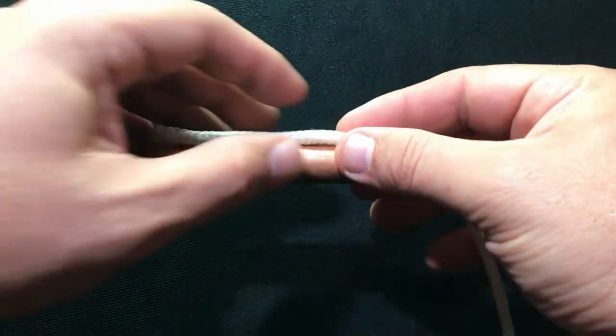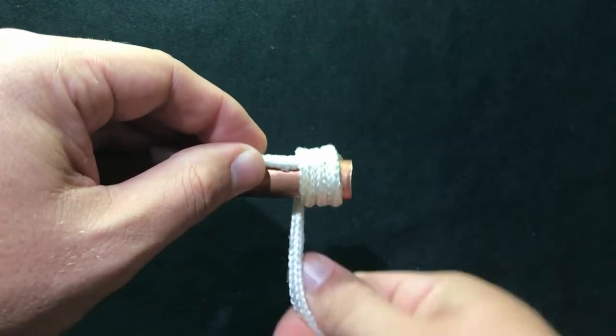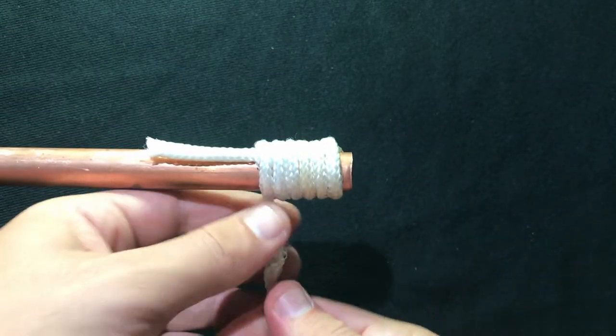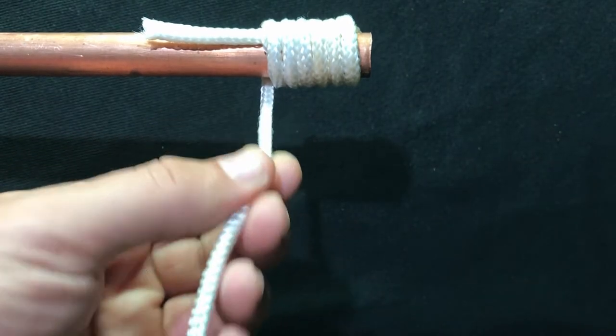First, I'm going to wrap the cord around the pipe as if I'm laying a base of thread on a hook shank. Now if this were a real fly, I would be holding the bobbin in my left hand, keeping the line taut.